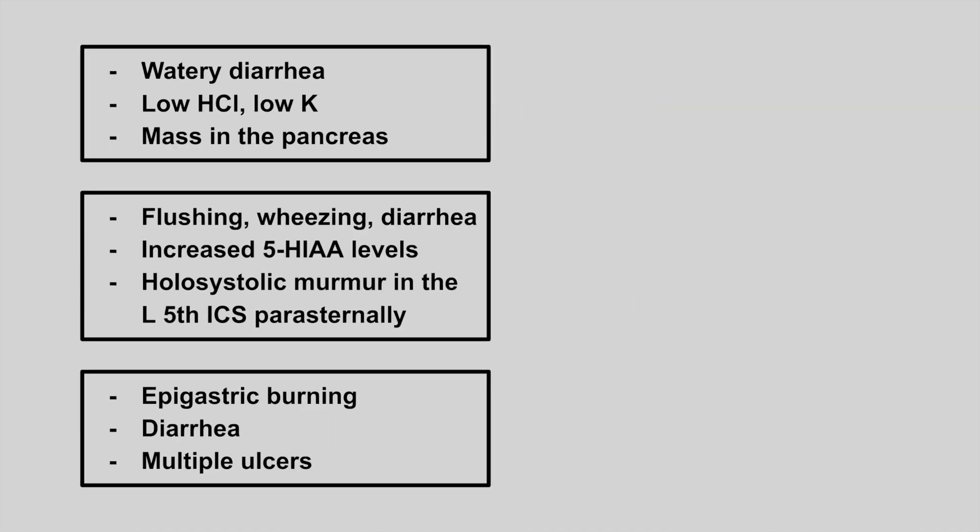The next patient has watery diarrhea, low acid, low potassium, and a mass in the pancreas. This is called a VIPoma.